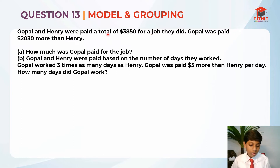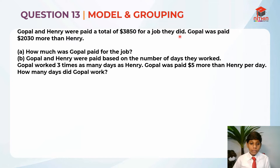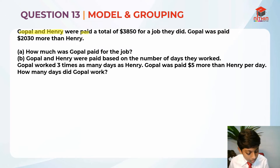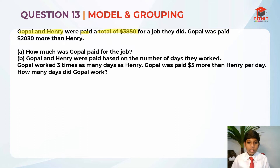Gopal and Henry were paid a total of $3,850 for a job they did. Gopal was paid $2,030 more than Henry. Part A: How much was Gopal paid for the job? We are going to do Part A first. Let's highlight the key information — Gopal and Henry were paid a total of $3,850 for the job.